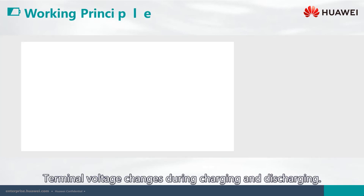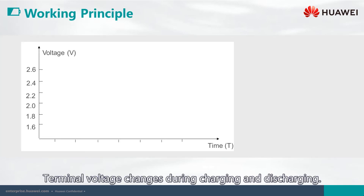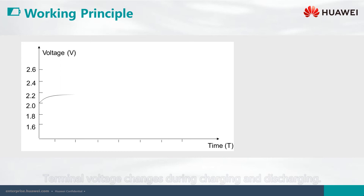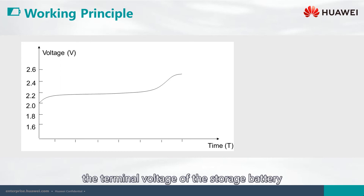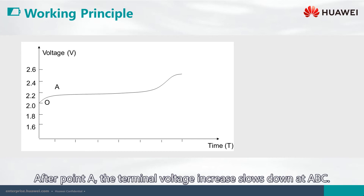Terminal voltage changes during charging and discharging. During charging, at the beginning, the terminal voltage of the storage battery increases dramatically along the OA curve. After point A, the terminal voltage increase slows down at ABC.